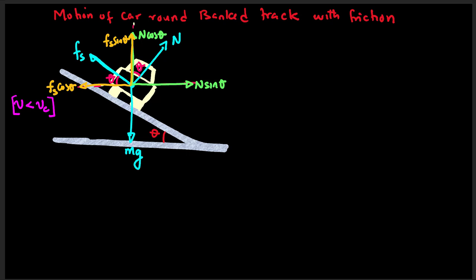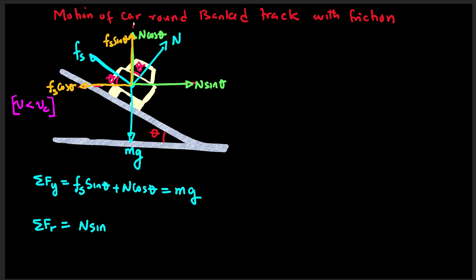The summation of forces along the y-direction gives: fs·sinθ + N·cosθ = mg. Similarly, the sum of forces along the radial direction gives: N·sinθ − fs·cosθ = mv²/r. Let's call these equation one and equation two.